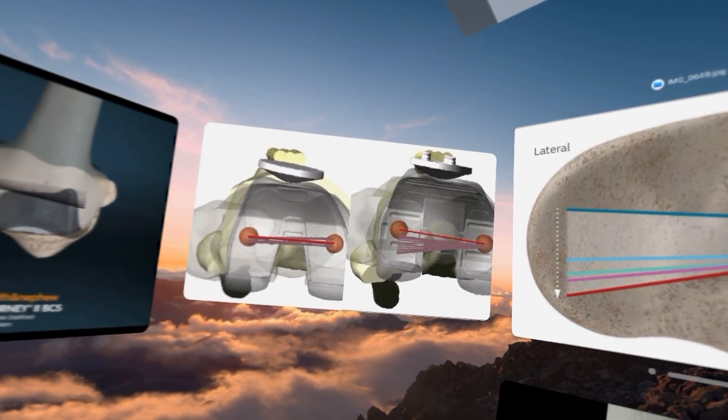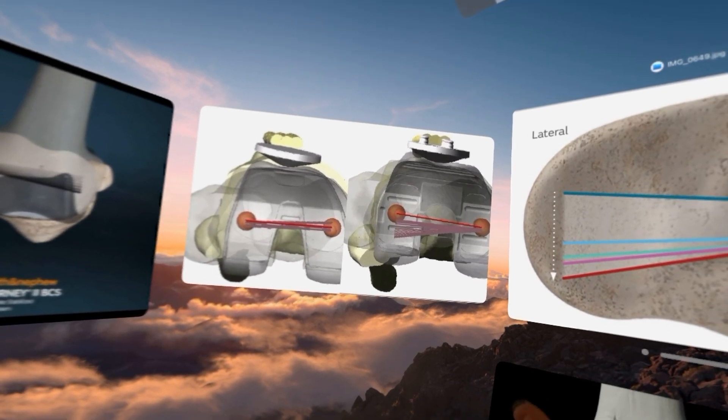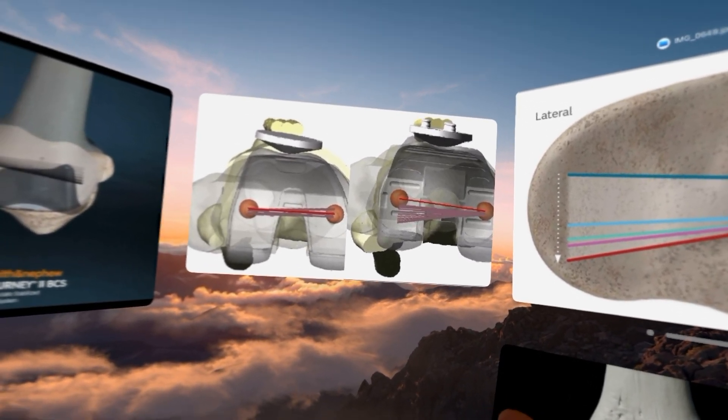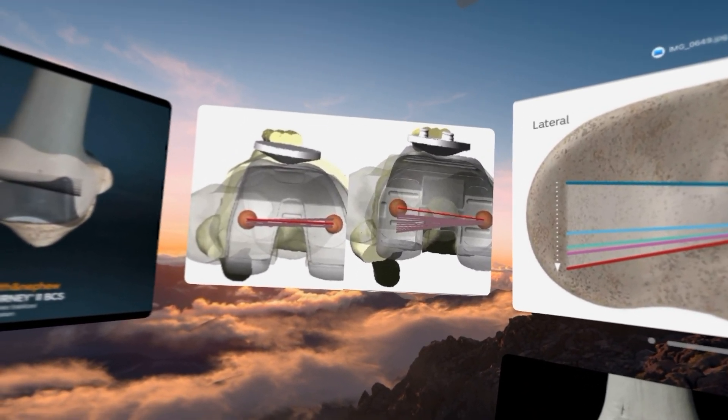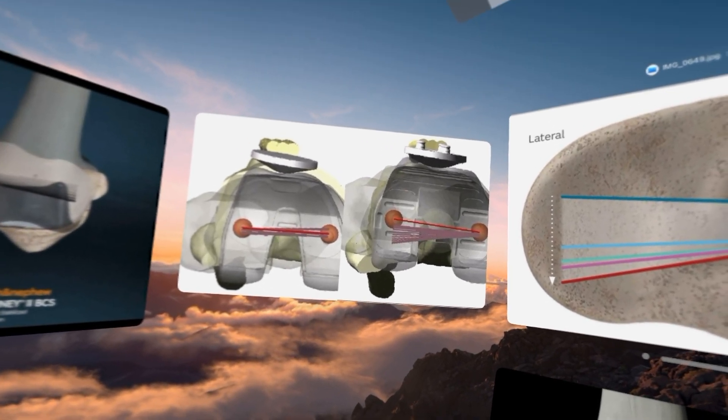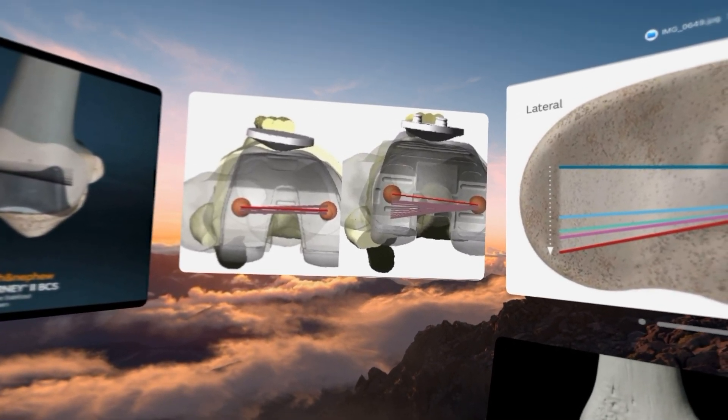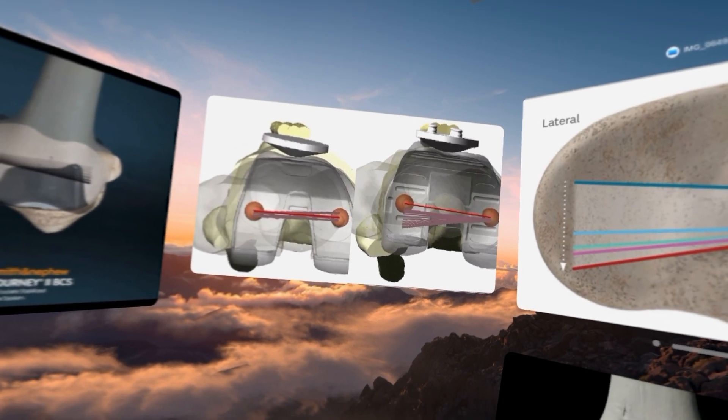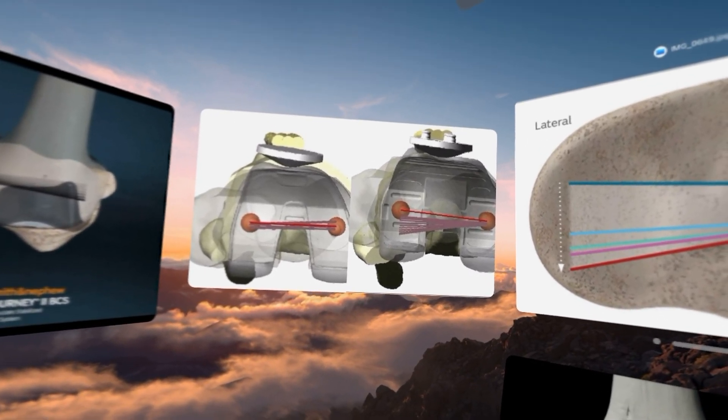By the design of the femoral component, the design of the tibial component, and the design of the plastic insert, all three of those together recreate normal anatomy. And then the way it works in motion recreates the kinematics.